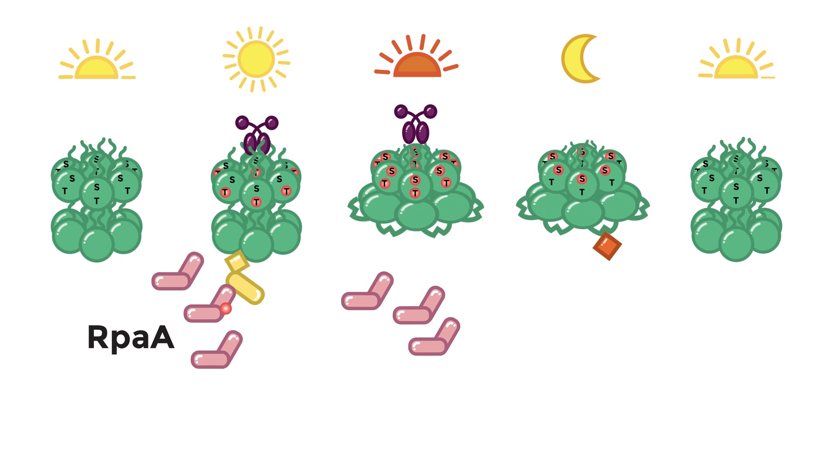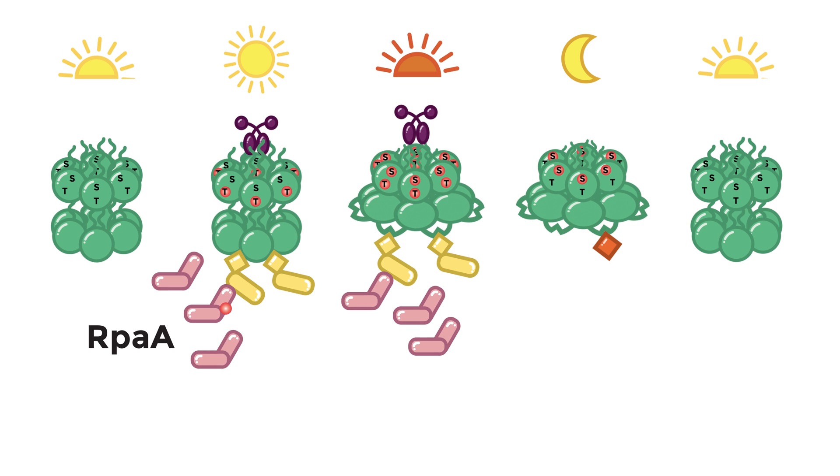As Kai-C becomes more phosphorylated, more SasA binds to Kai-C and autophosphorylates. Then, more RpaA gets phosphorylated.